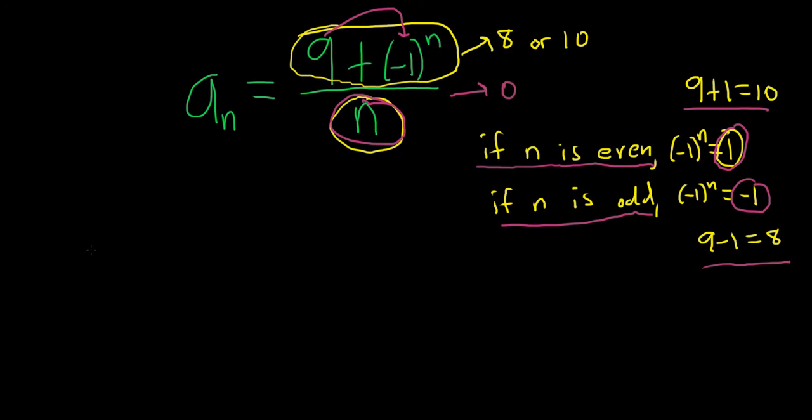so this should approach 0. So the limit, as n goes to infinity, of a sub n should be equal to 0. And that should be the limit of the sequence.